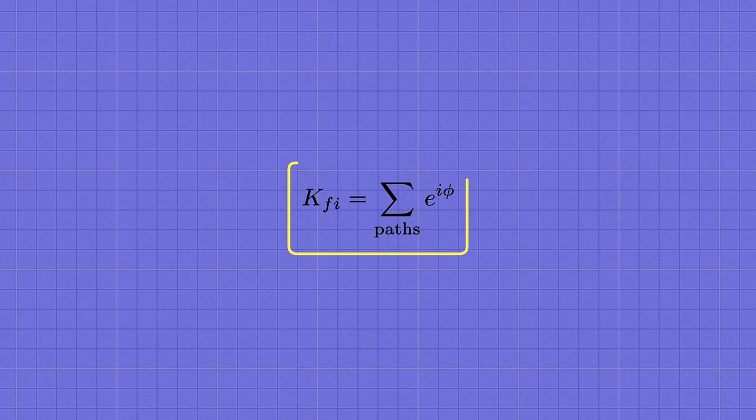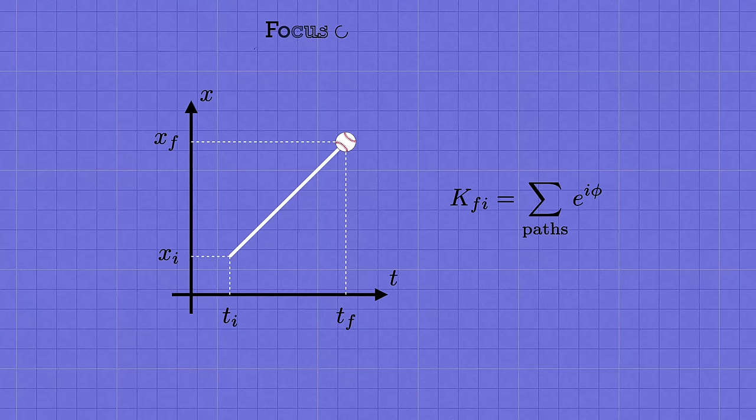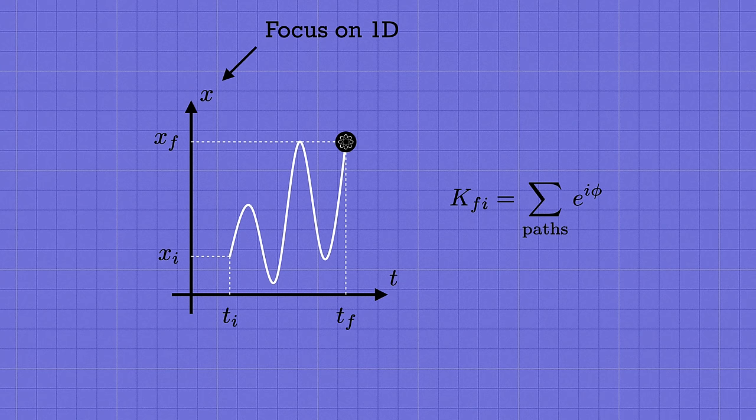We're used to finding a single classical trajectory for the position x as a function of the time t that goes from the starting point to the ending point. Maybe it's a straight line or a parabola or whatever. But in quantum mechanics, Feynman discovered that we need to count every possible trajectory that the particle could conceivably follow between those points. For each path, we write down the phase e to the i phi that it contributes, and then we add them all up to find the total amplitude.